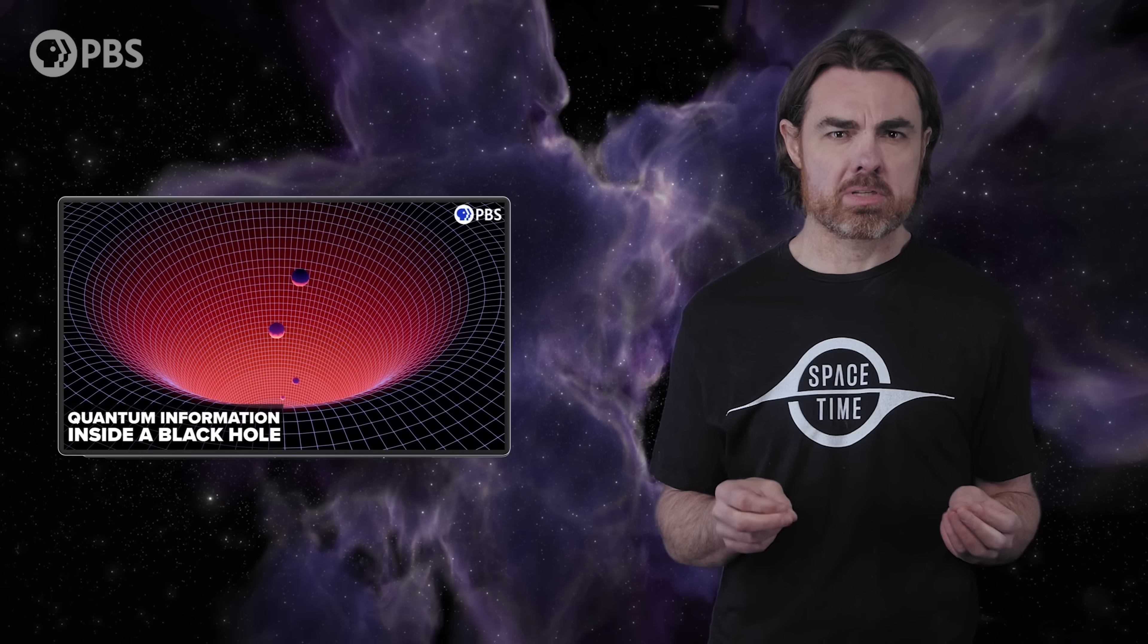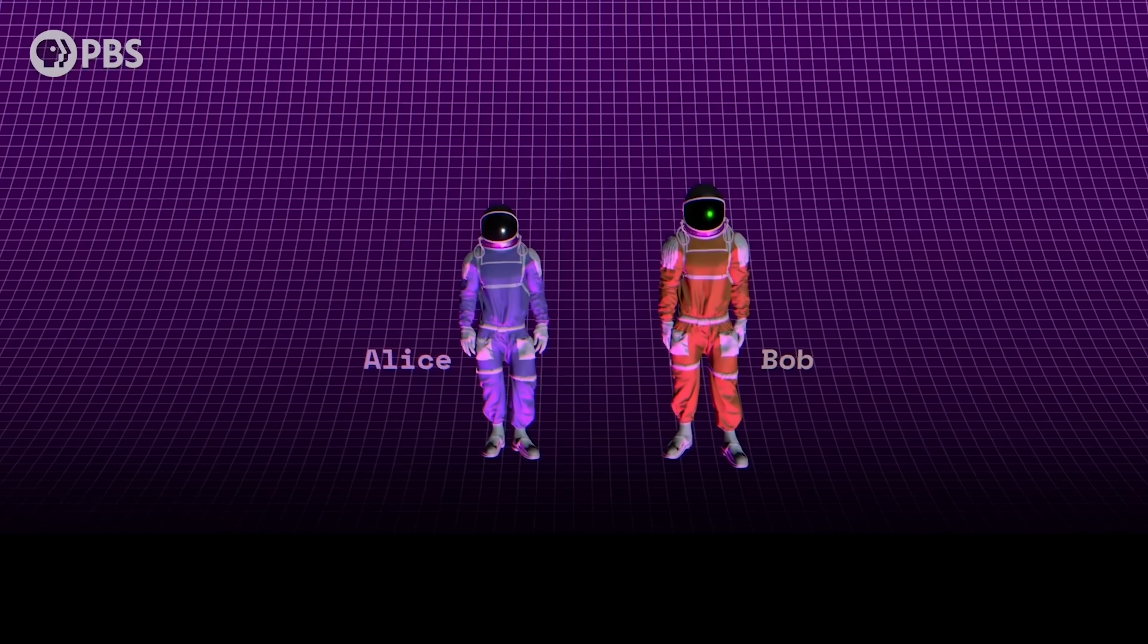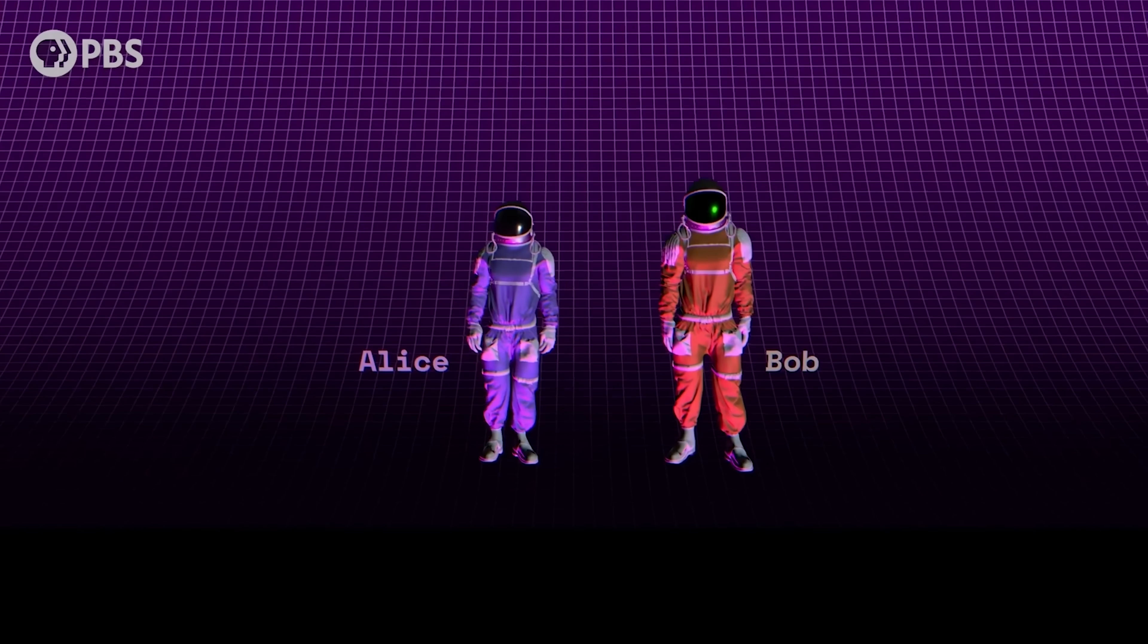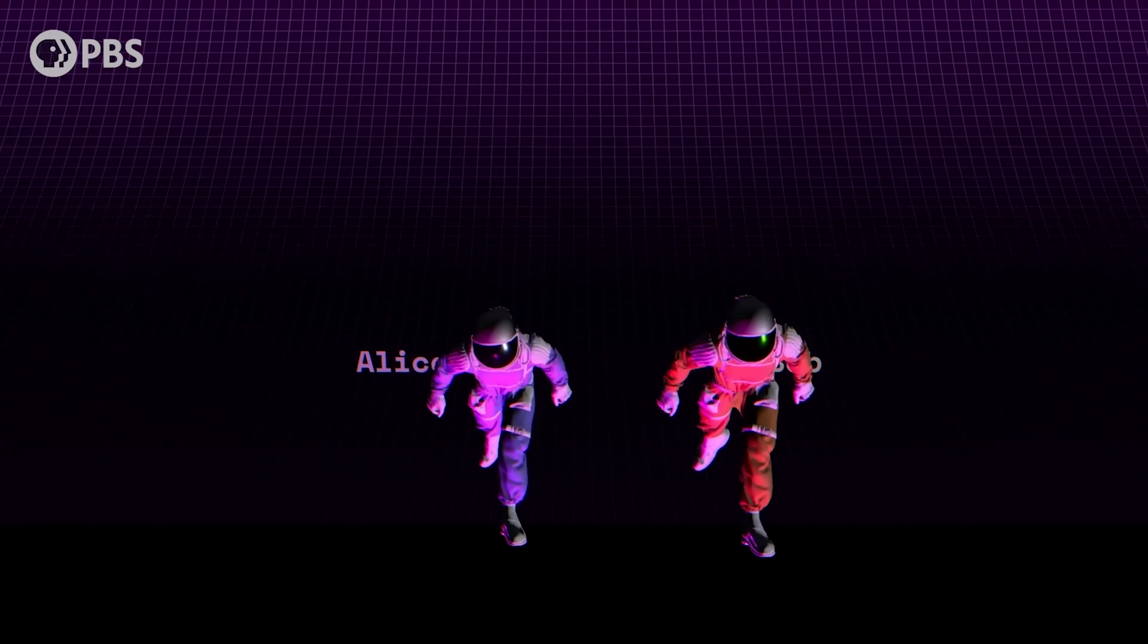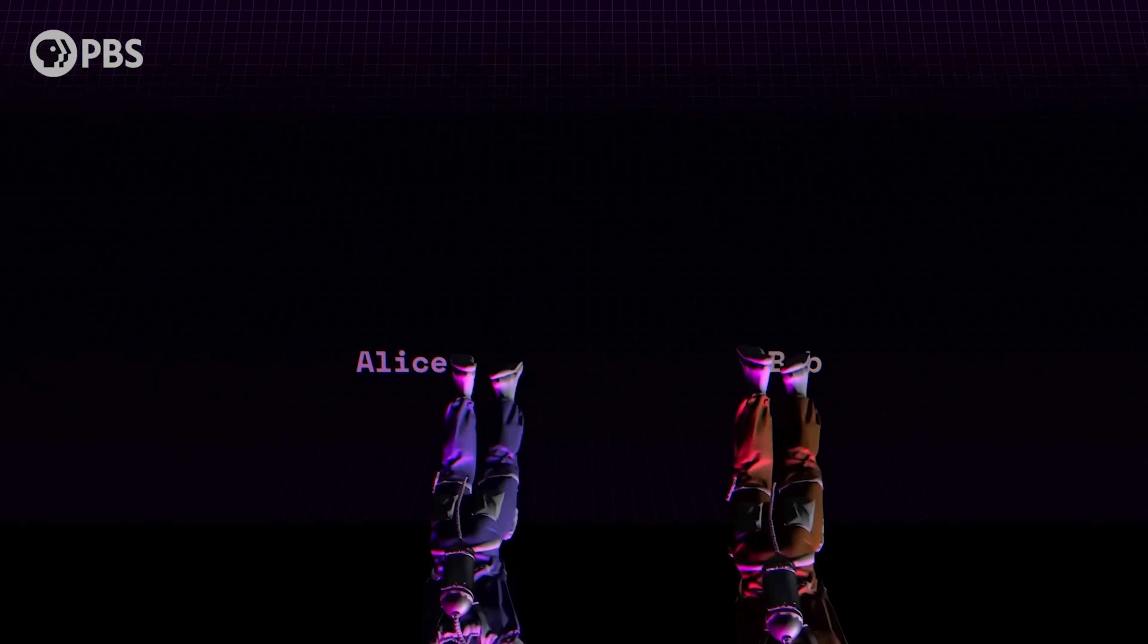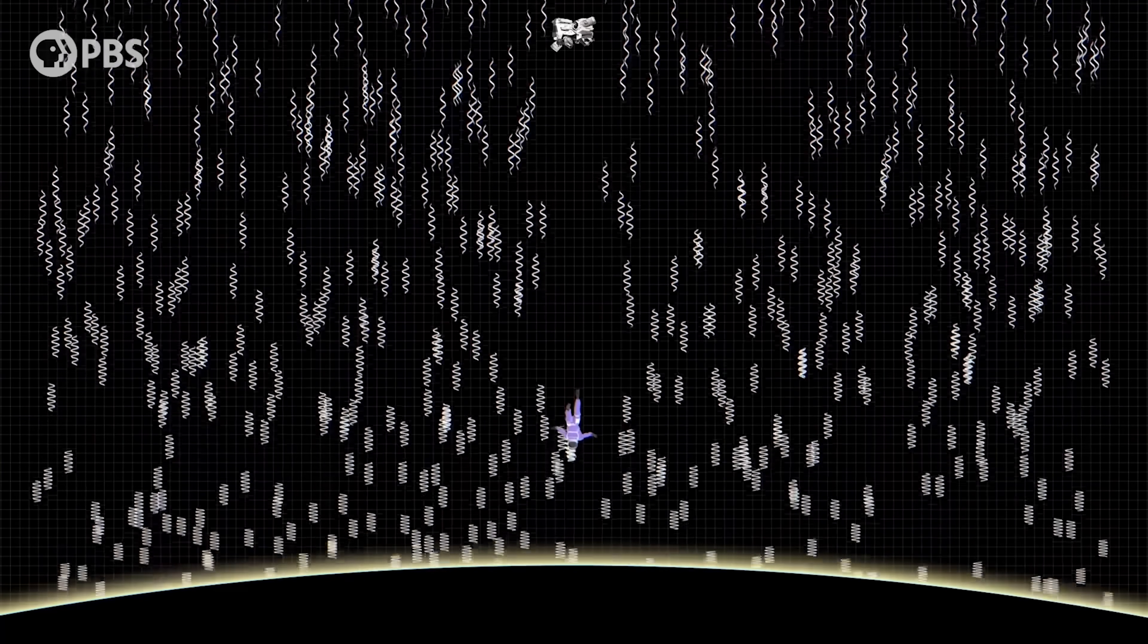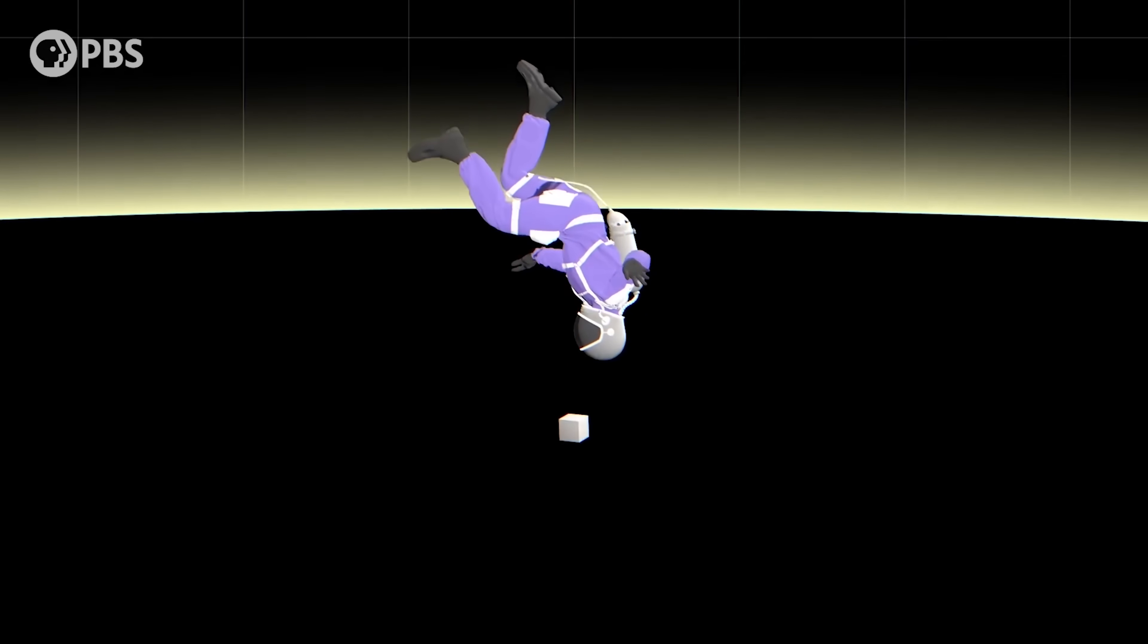The conflict we looked at recently is the black hole information paradox, and it's not a bad idea to watch that episode before this one. In it, our intrepid heroes of the gedanken experiment, Alice and Bob, discovered that black holes must violate either a fundamental principle of general relativity or of quantum mechanics. When Alice carries a quantum bit, a qubit, into a black hole, she witnesses the qubit cross the event horizon.